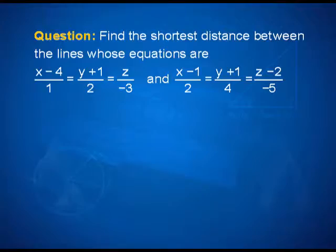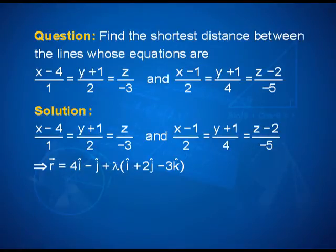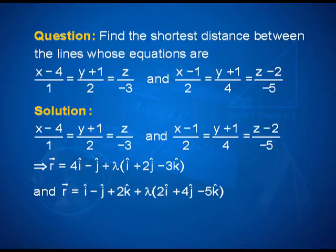The next question has two lines given in Cartesian form: (x minus 4)/1 = (y plus 1)/2 = z/(−3), and (x minus 1)/2 = (y plus 1)/4 = (z minus 2)/(−5). Translate these into vector form. The known point on the first line is (4, −1, 0), so r = 4i-cap minus j-cap plus lambda times (i-cap plus 2j-cap minus 3k-cap). The second line gives r = i-cap minus j-cap plus 2k-cap plus lambda times (2i-cap plus 4j-cap minus 5k-cap).